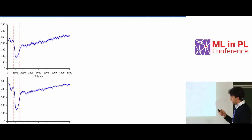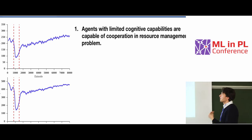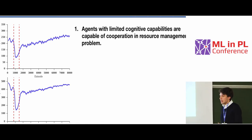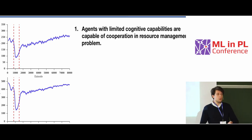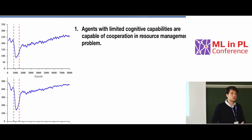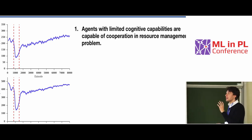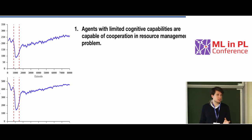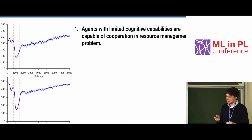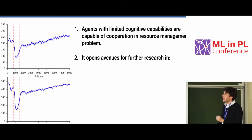First is that agents with actually very limited cognitive capabilities are capable of cooperation in a resource management problem. This is actually quite important, because when we speak to somebody doing research in social science about it, this is usually seen as something quite specific to humans and quite complex. So this was actually quite exciting. But even more important and more exciting for me personally, is that it opened avenues for further research.